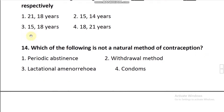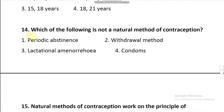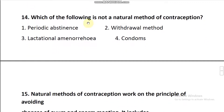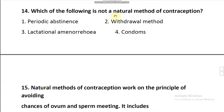Question number 14: Which of the following is not a natural method of contraception? There are three different types of natural contraceptive methods.